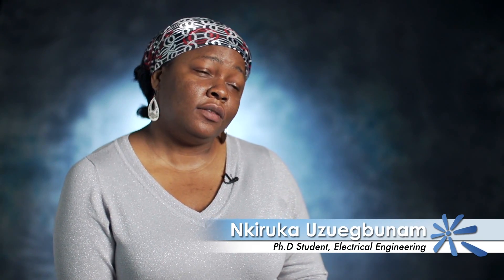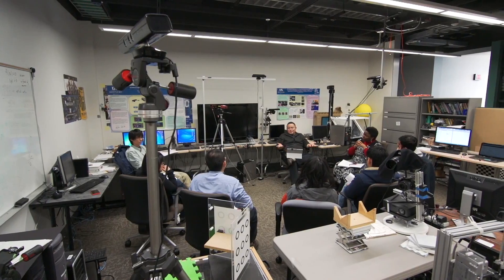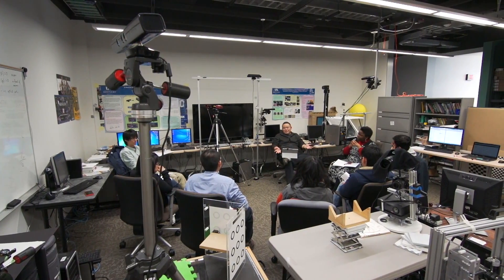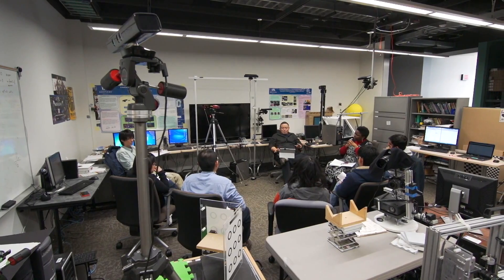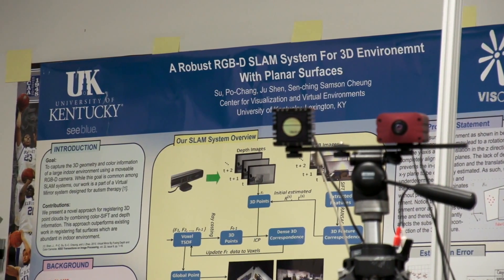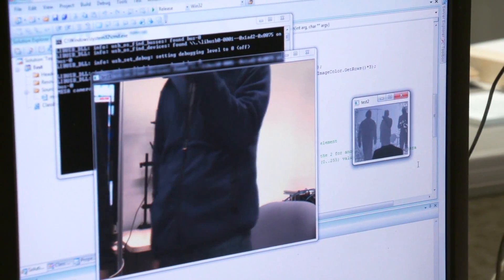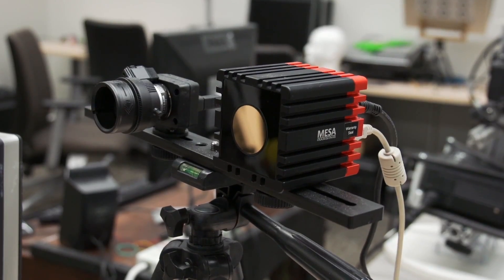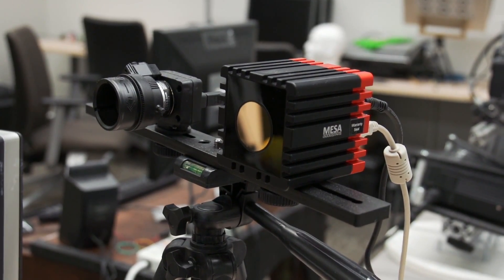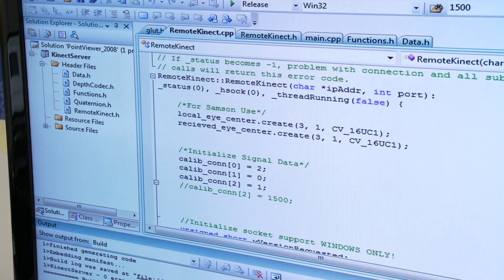My name is Nki Ruka Uzwebuna. I'm a second year PhD student in electrical engineering. My research is in developing novel self-modeling behavioral therapies for young children on the autism spectrum using computer vision techniques, signal processing techniques, as well as privacy protection techniques.